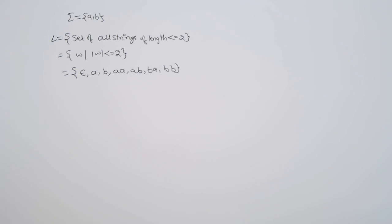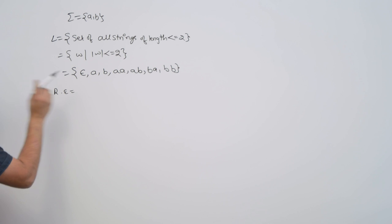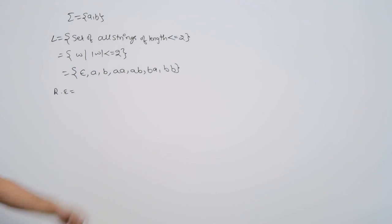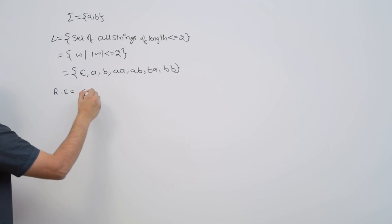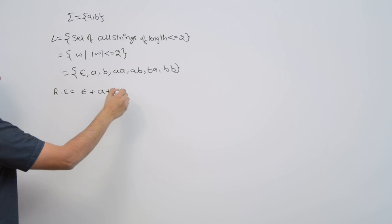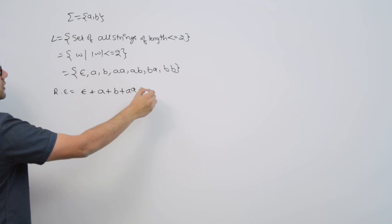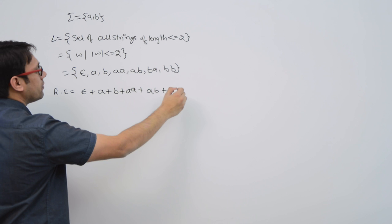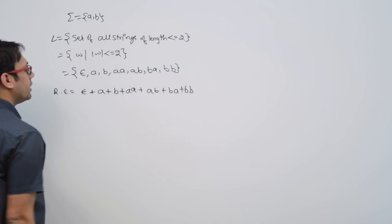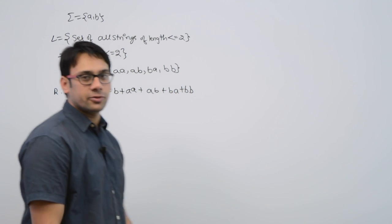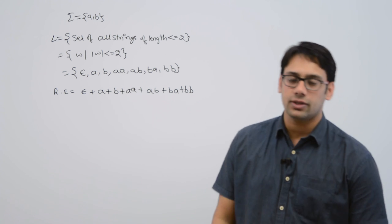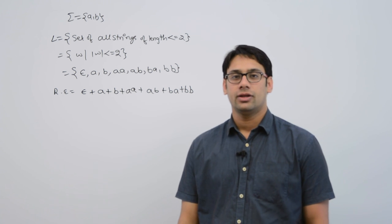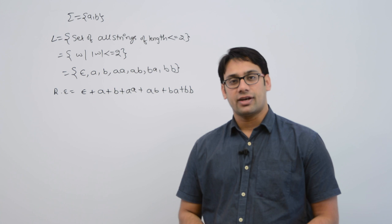These are the strings. Therefore, if you make a regular expression for this language, that means you are going to take a union of all of them. So it will be represented by: epsilon + a + b + aa + ab + ba + bb. Now you can make a regular expression like this because the number of strings in this language is finite.